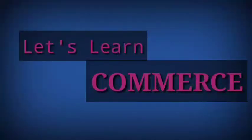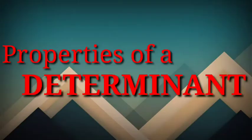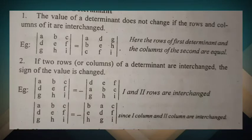Let's learn commerce. Please like, share and subscribe. Properties of a determinant. First property: the value of a determinant does not change if the rows and columns are interchanged. This means that in a determinant, interchanging the rows and columns does not change its value.